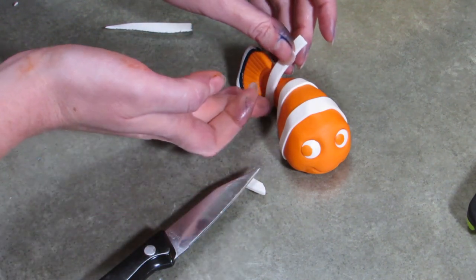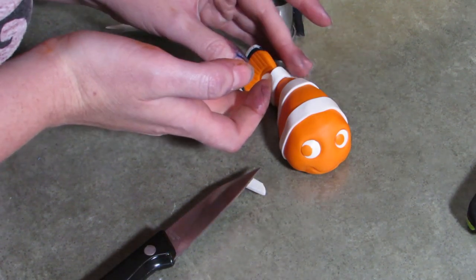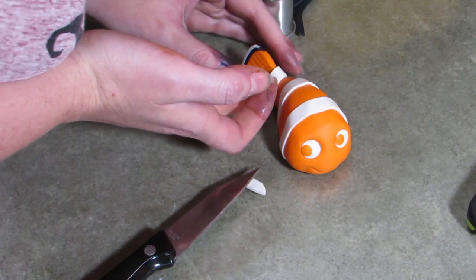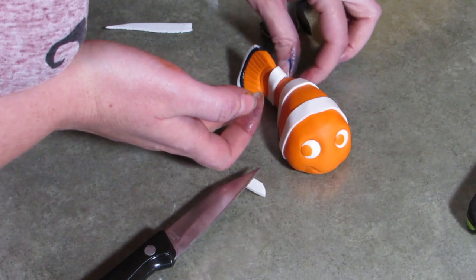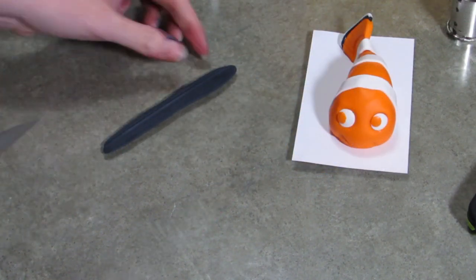We're going to add another stripe that goes over the seam. So that will help anchor the two pieces together. Just another piece of white. Same idea as the other two stripes. Just place it over, press it down into shape, and you've got it.